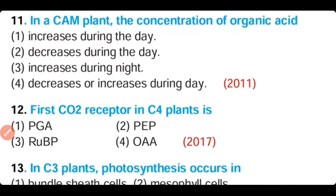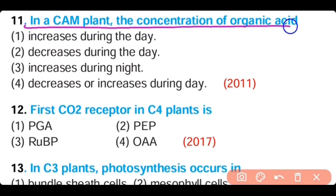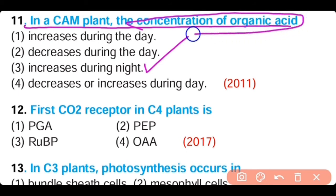Question number 11. In CAM plants, the concentration of organic acid: increases during day, decreases during day, increases during night, or decreases or increases during day. The correct answer is option 3. In CAM plants, stomata are open at night, so carbon dioxide enters at night, and the concentration of organic acid increases during night.